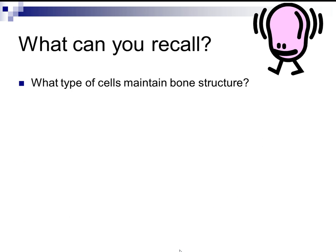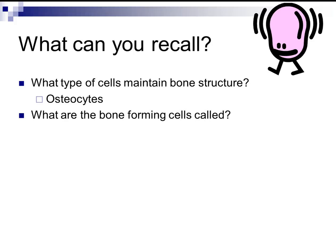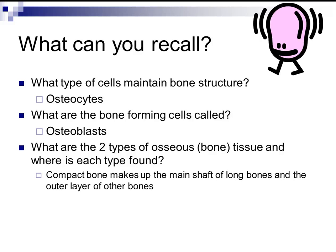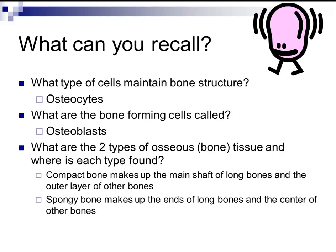To review: the cells that maintain bone structure are osteocytes. Bone-forming cells are called osteoblasts. The two types of osseous tissue are compact bone, which makes up the shaft of long bones and the outer layer of other bones, and spongy bone, which makes up the ends of long bones and the center of other bones.